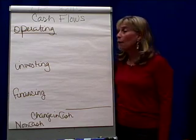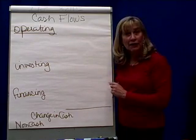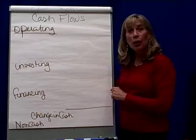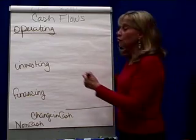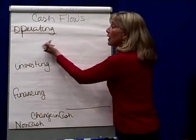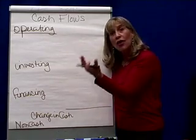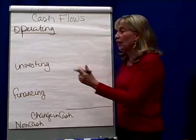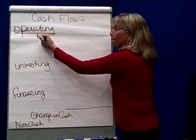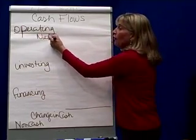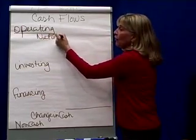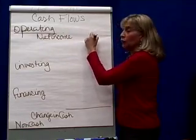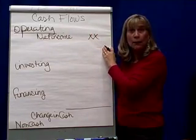Those come from operating activities. Operating activities primarily have to do with the income statement, and the result of the income statement is net income. So that's always the very first thing on a statement of cash flows — we're going to put down our net income.